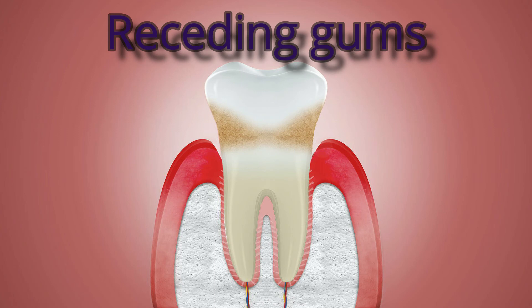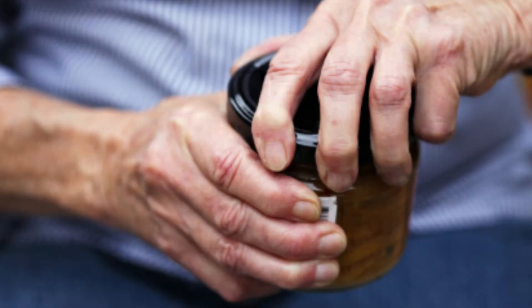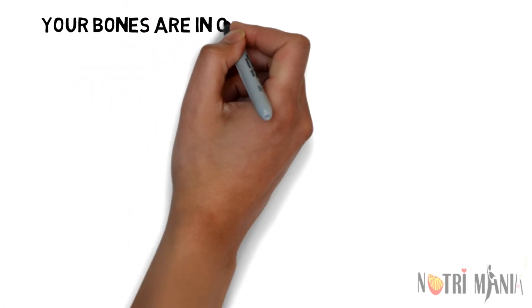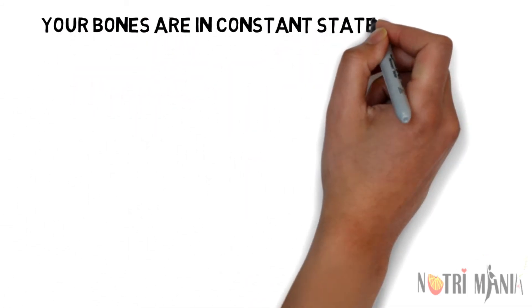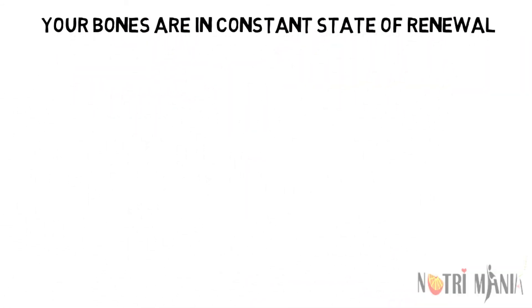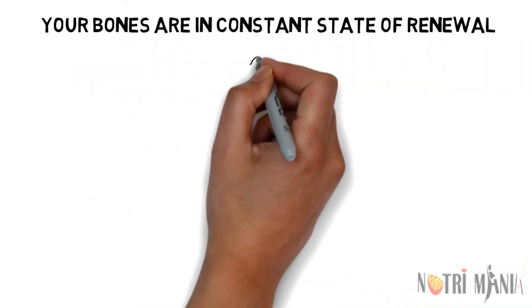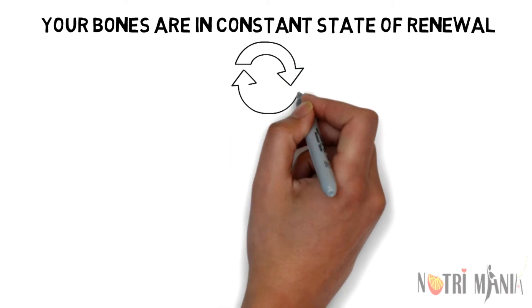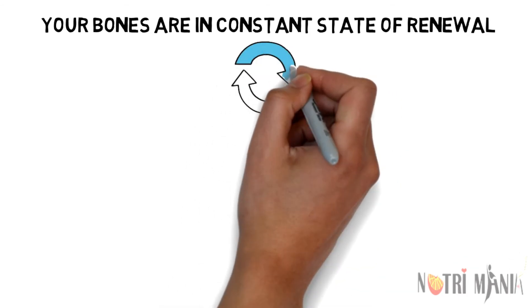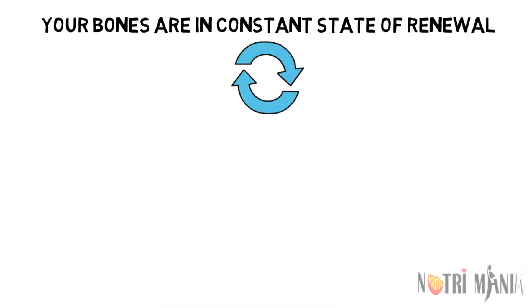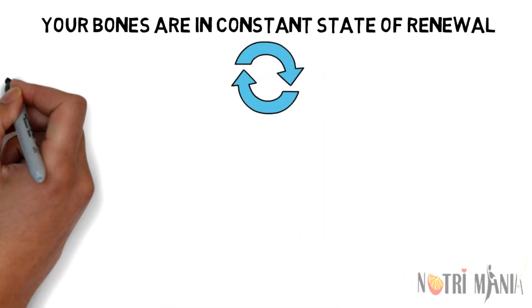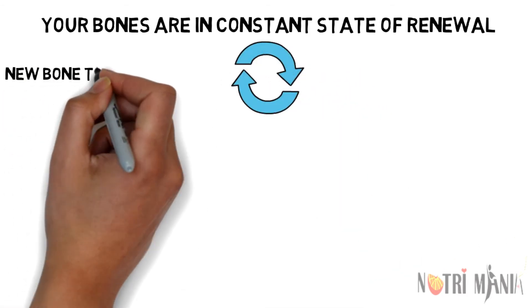Receding gums can occur if your jaw is losing bone. Weaker grip strength is another symptom. Your bones are in a constant state of renewal — new bone is made and old bone is broken. When you are young, your body makes new bones faster than it breaks the older ones, thus increasing bone mass.